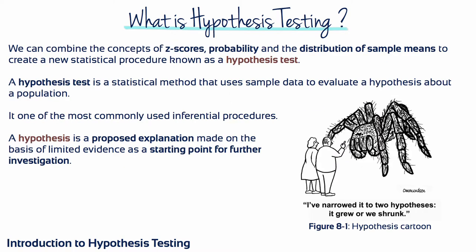We can combine the concepts of z-scores, probability, and the distribution of sample means to create a new statistical procedure known as a hypothesis test. This is a statistical method that uses sample data to evaluate a hypothesis about a population. It's one of the most commonly used inferential procedures.